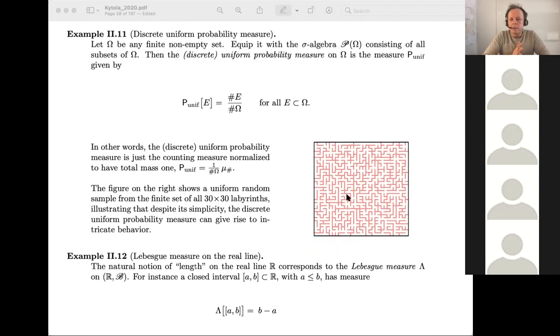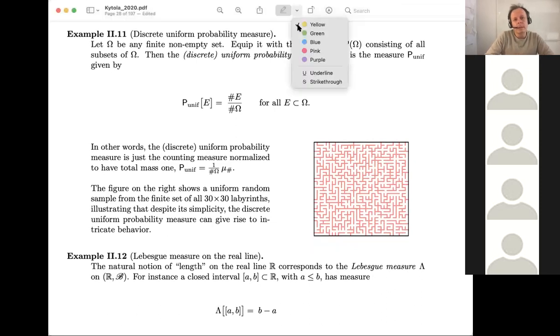Another example, discrete uniform probability measure. What is a discrete uniform probability measure? Take a finite set now. Well, let omega be a finite and non-empty set. And we take the power set to be the sigma algebra. And we define the function P unif of a set E to be number of elements in E divided by the total number of elements.